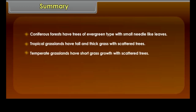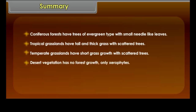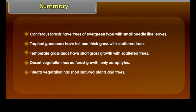Temperate grasslands have short grass growth with scattered trees. Desert vegetation has no forest growth, only xerophytes. Tundra vegetation has short-statured plants and trees.